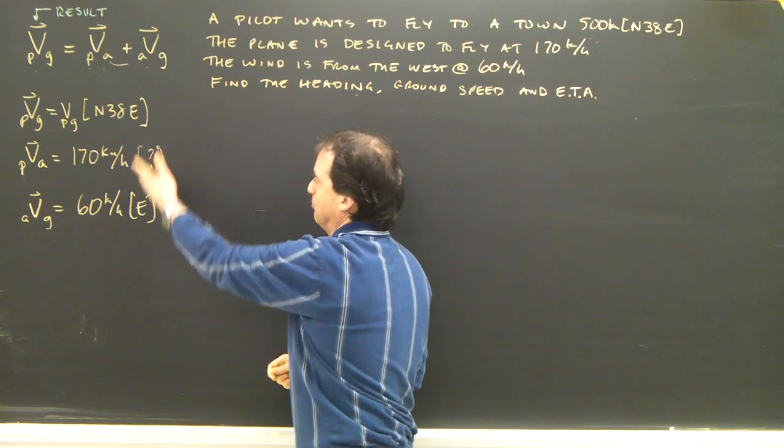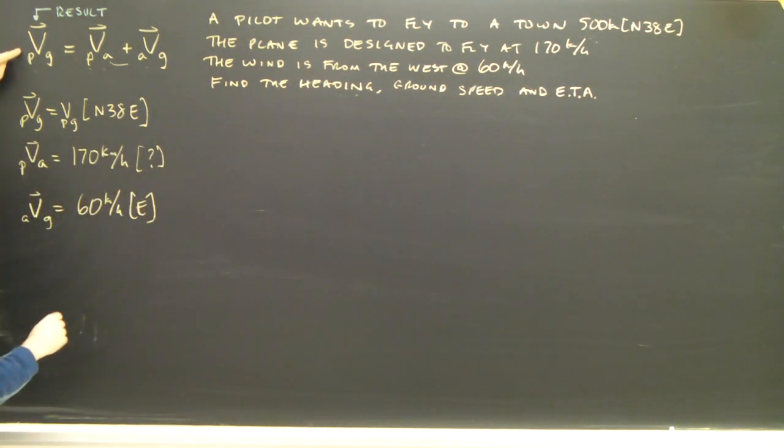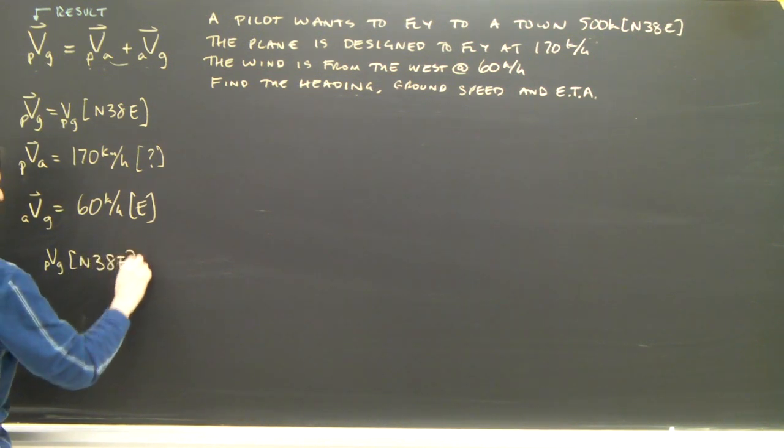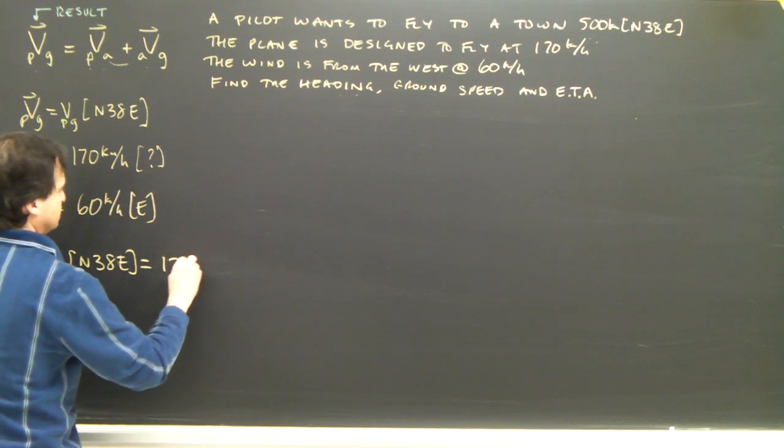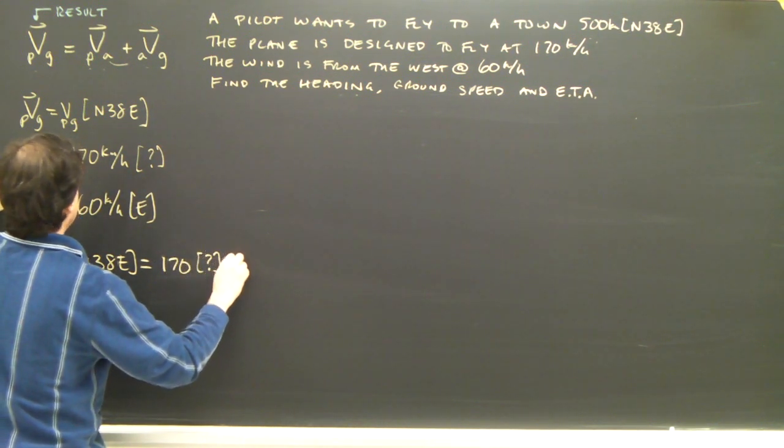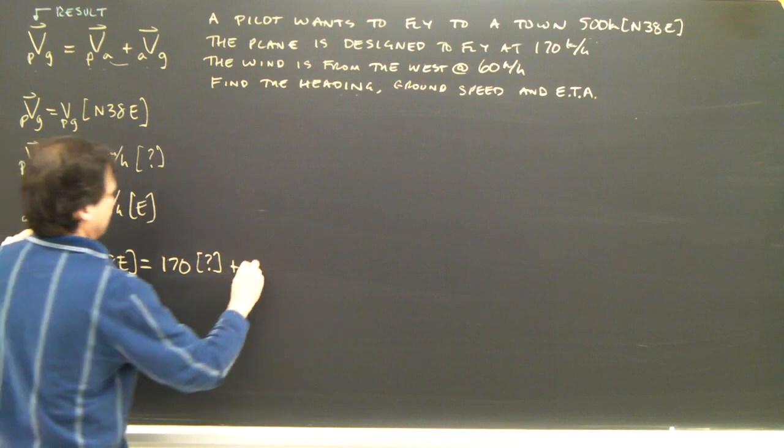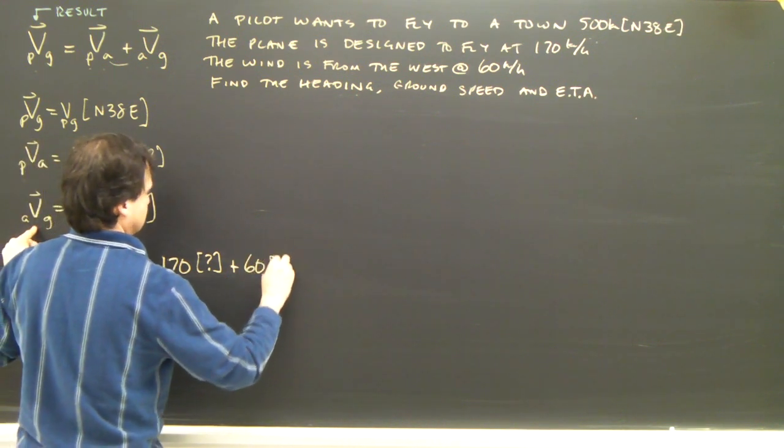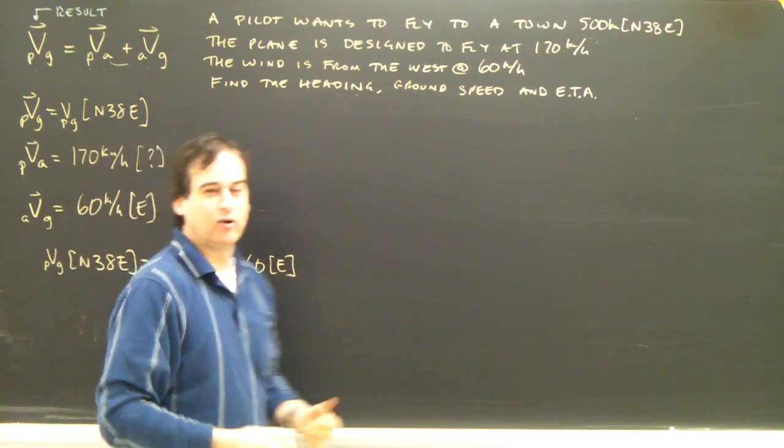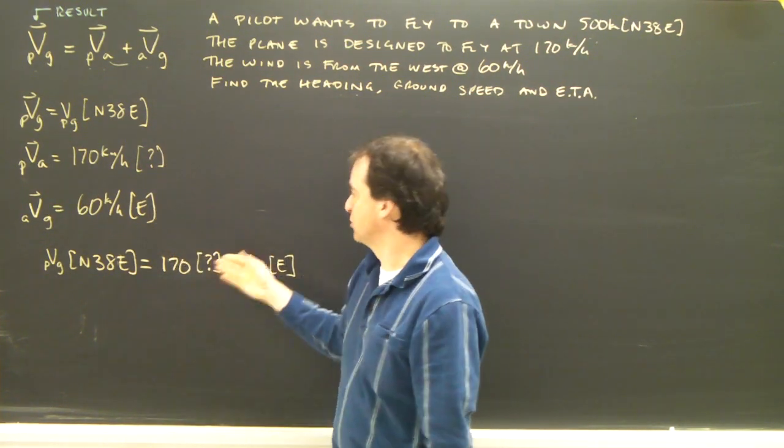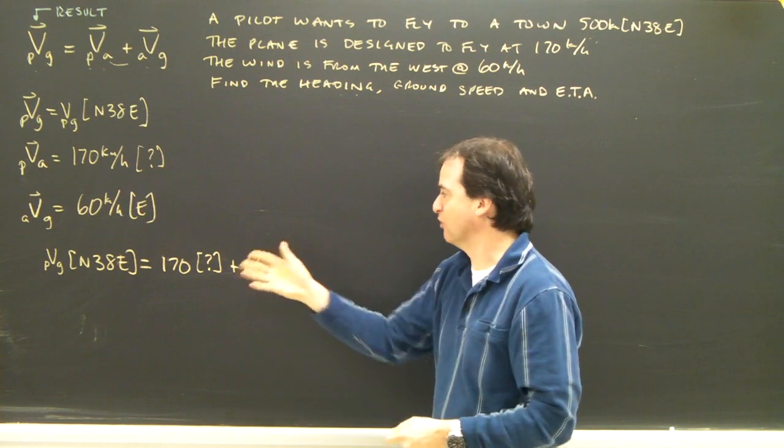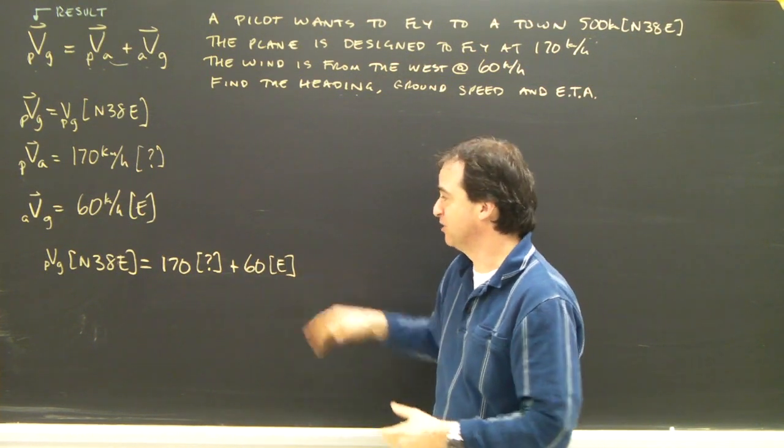Well here are my numbers, I put them in there. Let's plug them in the equation. The plane relative to the ground is equal to the plane relative to the air plus the air relative to the ground. Then normally I would say, as soon as you fill in these three, you're pretty much done. Because you just plug them in here, rearrange, it's a vector equation, and you can solve a vector equation. But this one's different.